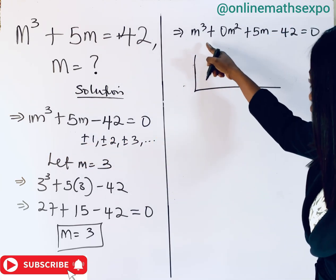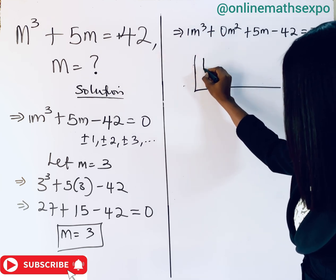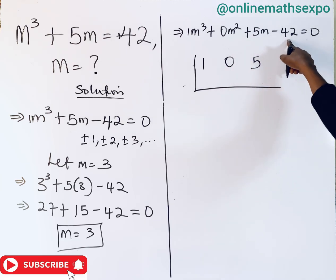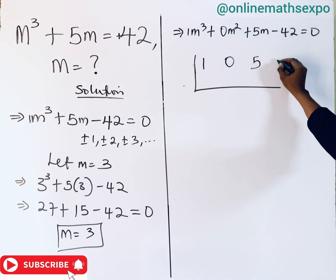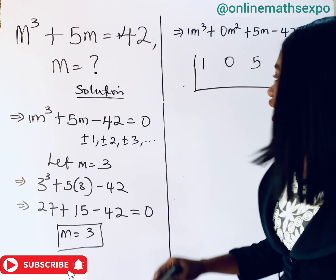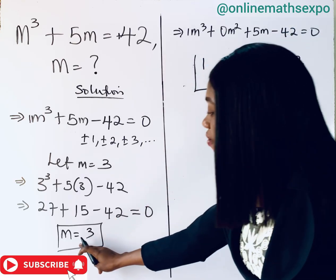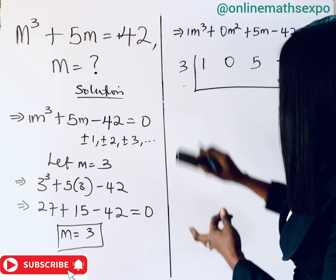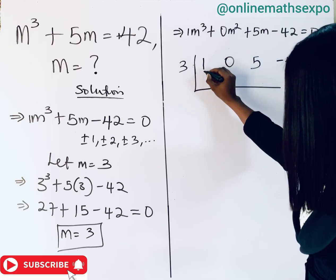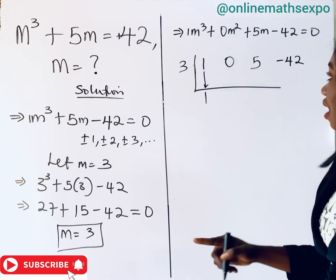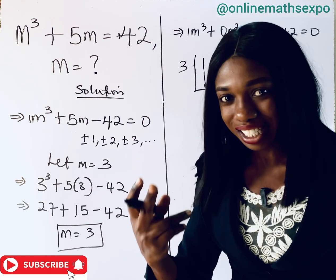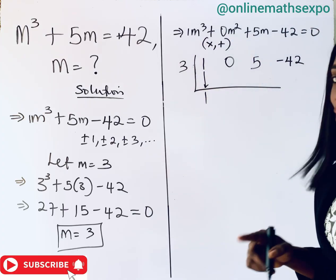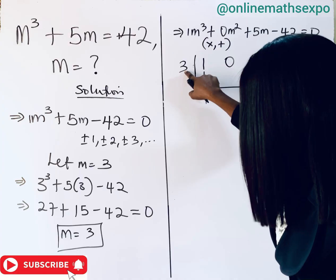We set up the synthetic division table using the coefficients: 1, 0, 5, and the constant −42. We place the known root m = 3 on the side. We bring down the first coefficient, which is 1.